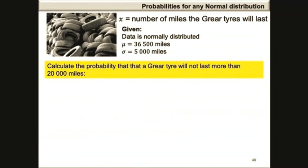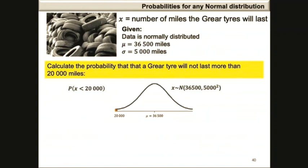The question asks us to calculate the probability that a Greer tire will not last more than 20,000 miles. This can be written as the probability that x is less than 20,000. On the graph, this is represented as the shaded region to the left of 20,000, with the population mean of 36,500 indicated in the middle.